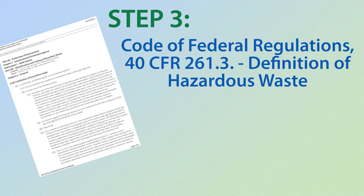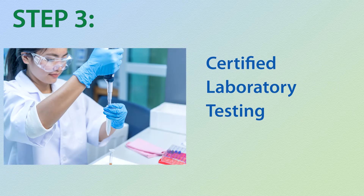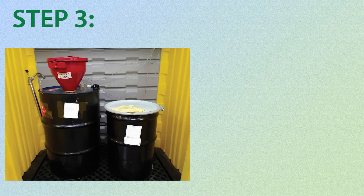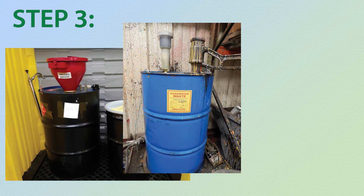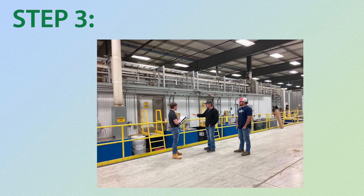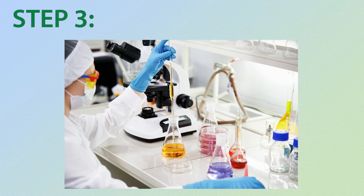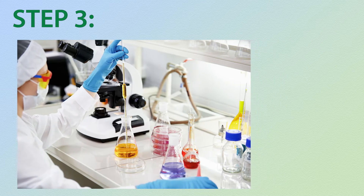Step 3: for each waste that meets the definition of solid waste, check to see if it meets the definition of hazardous waste as found in 40 CFR 261.3. This can be done in two ways: use the safety data sheet (SDS) and knowledge of how the waste was generated — we call this process knowledge — and/or have the waste analyzed at a KDHE certified laboratory. Remember, all waste should be evaluated at the point of generation. Some wastes may need to be evaluated using both process knowledge and analysis, while others can use one or the other. In some cases, such as with regulated metal contaminants, an analytical test will be required to prove the waste is not a hazardous waste.